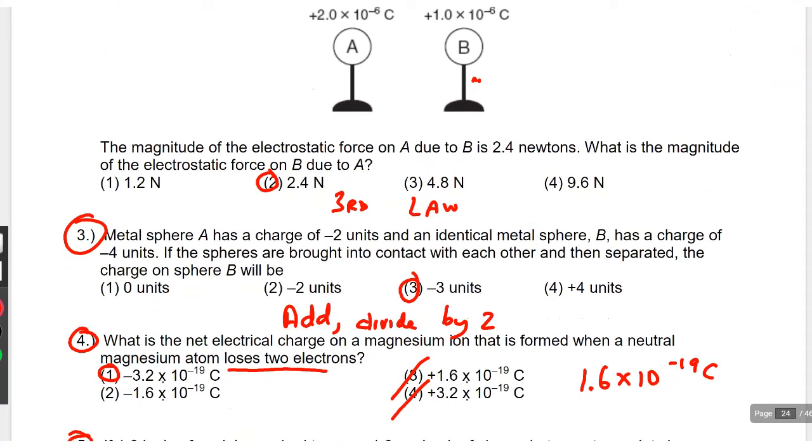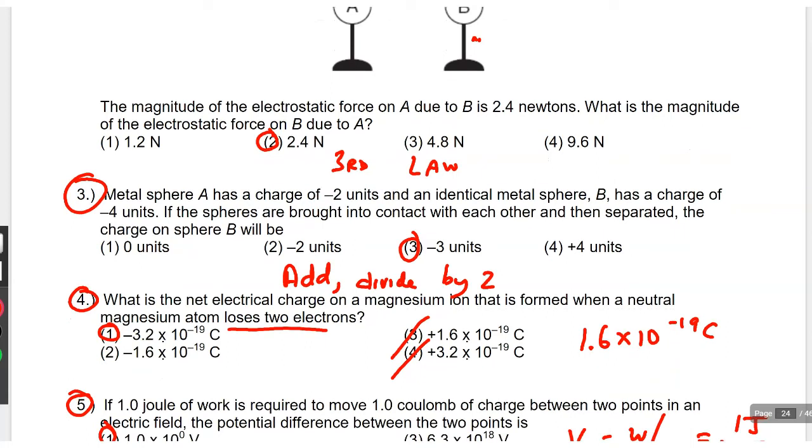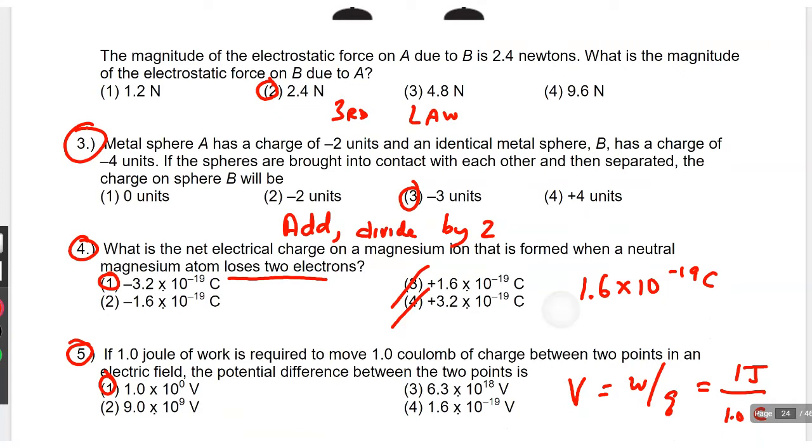This is one of those add and divide. Number 3 is one of those add and divide by 2. You know, two charges side by side, touched, and brought into contact, and separated. So, you add and divide by 2. So, negative 2 plus negative 4 add them, negative 6, divide by 2, negative 3.